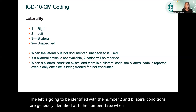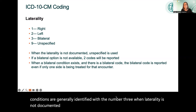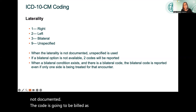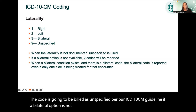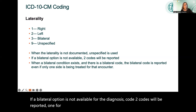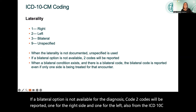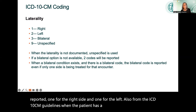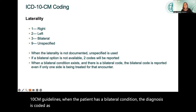When laterality is not documented, the code is going to be billed as unspecified. Per ICD-10-CM guidelines, if a bilateral option is not available for the diagnosis codes, two codes will be reported — one for the right side and one for the left. When the patient has a bilateral condition, the diagnosis is coded as bilateral, even if only one side is being treated at that specific encounter.